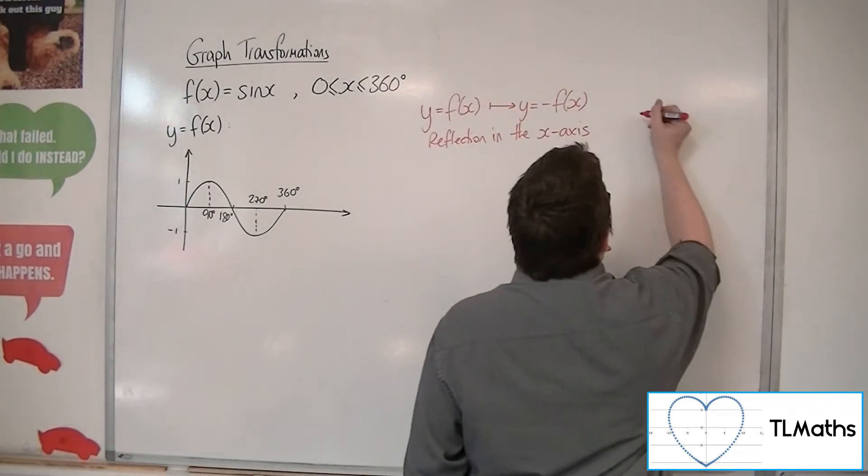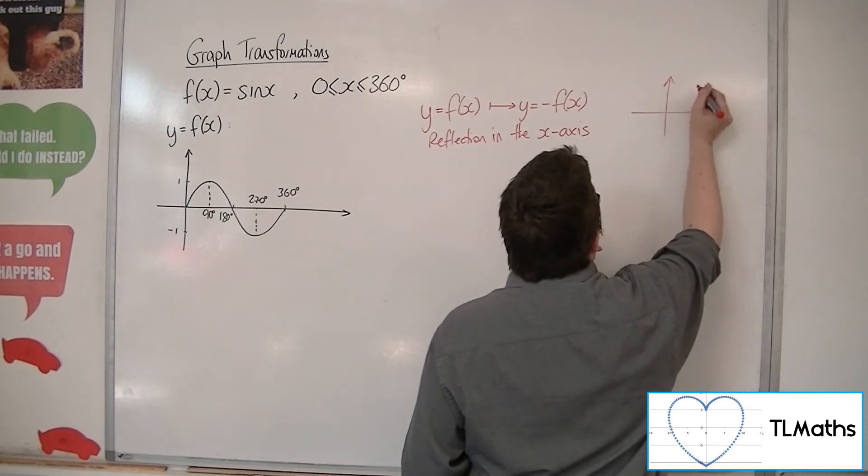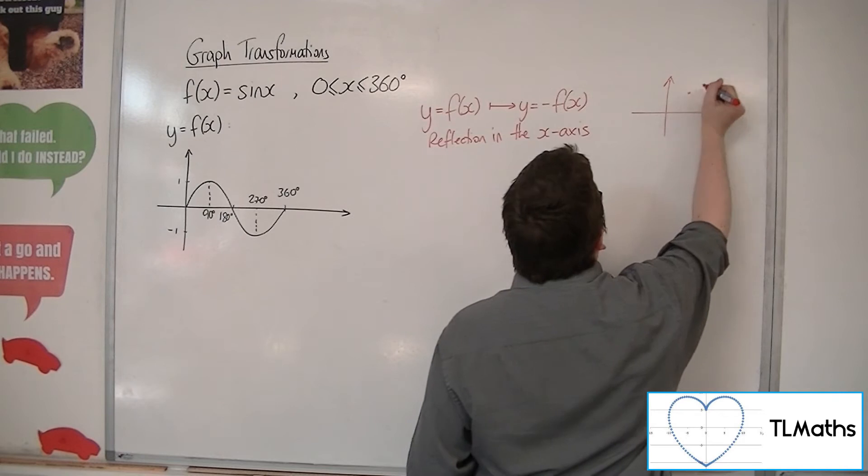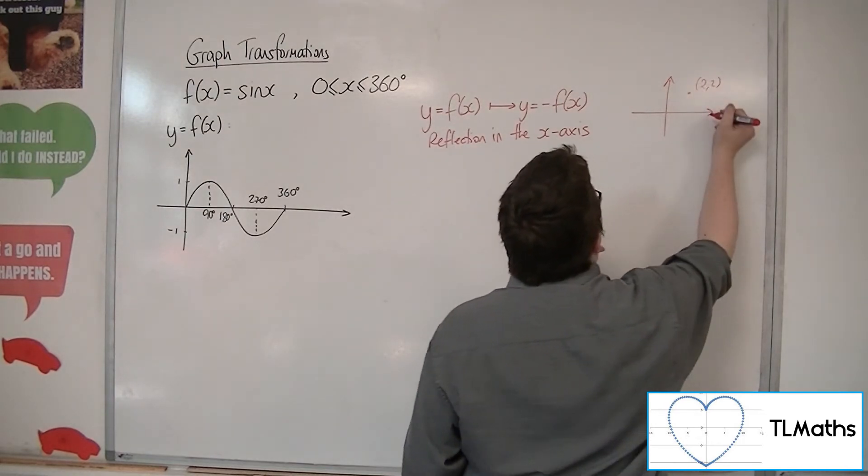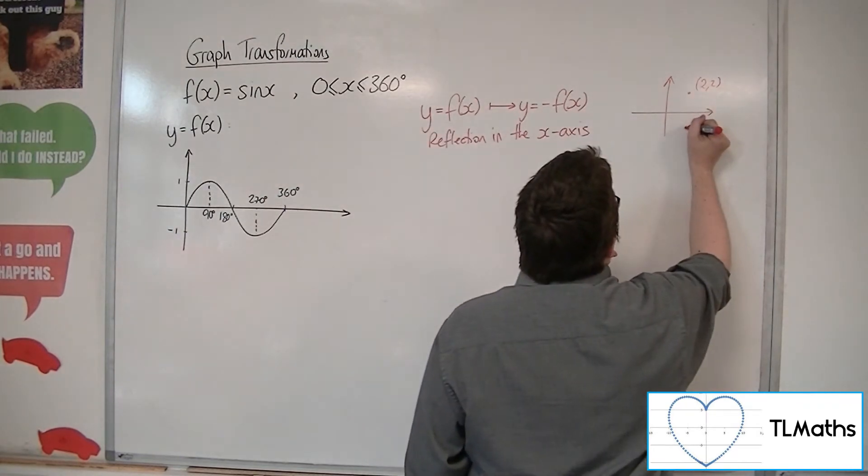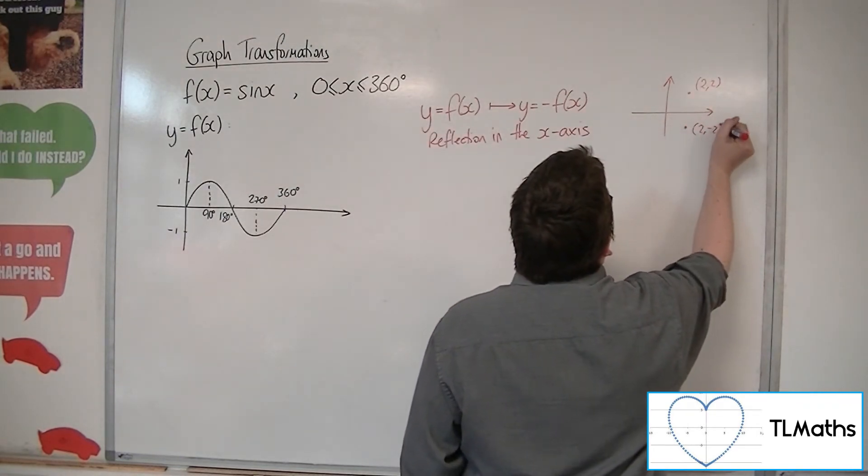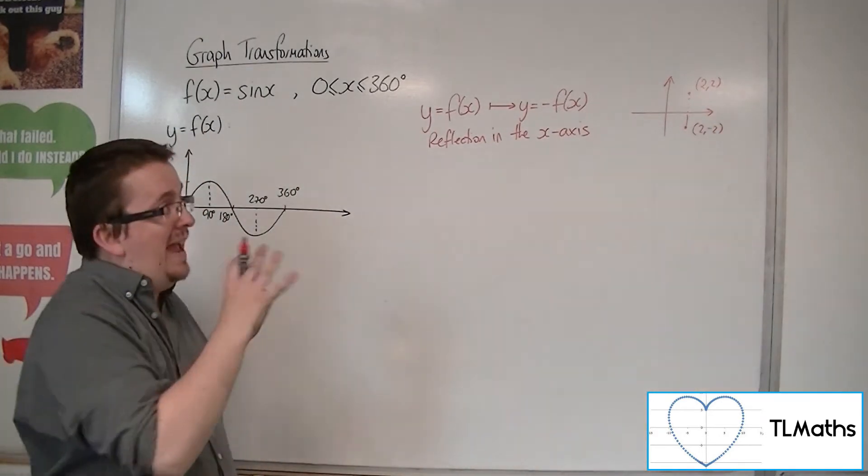So if you're unsure, then think about a coordinate that's not on either of the coordinate axes. So just choose a point. Let's say 2, 2. If I change the y-coordinate and it becomes minus 2, then this is a reflection in the x-axis.